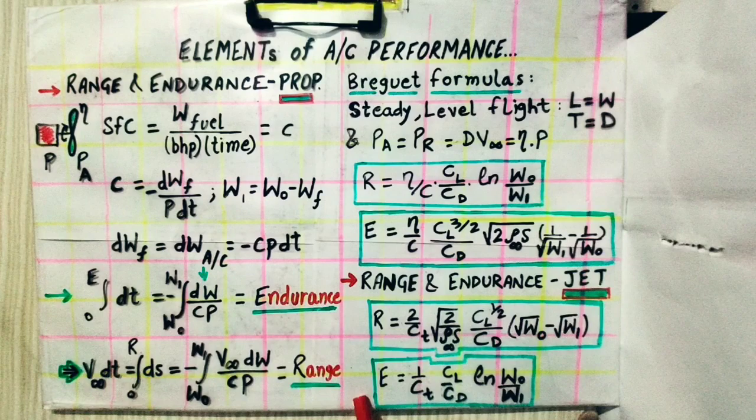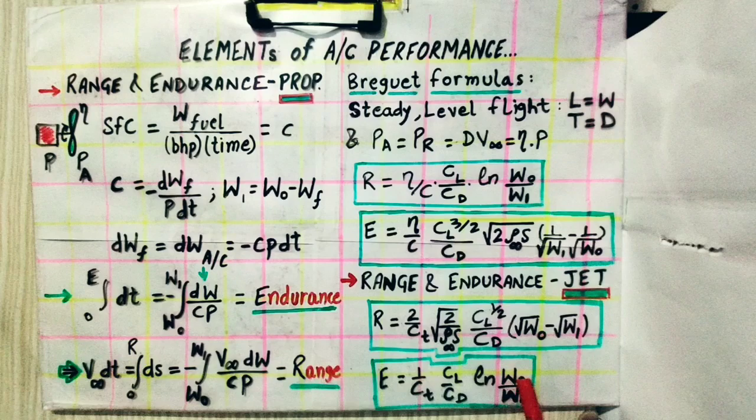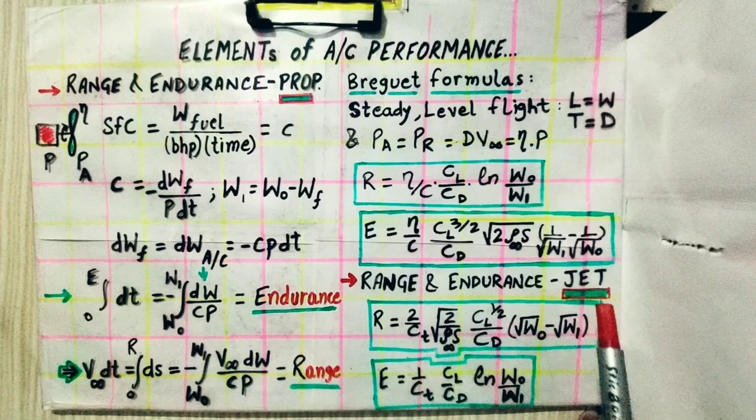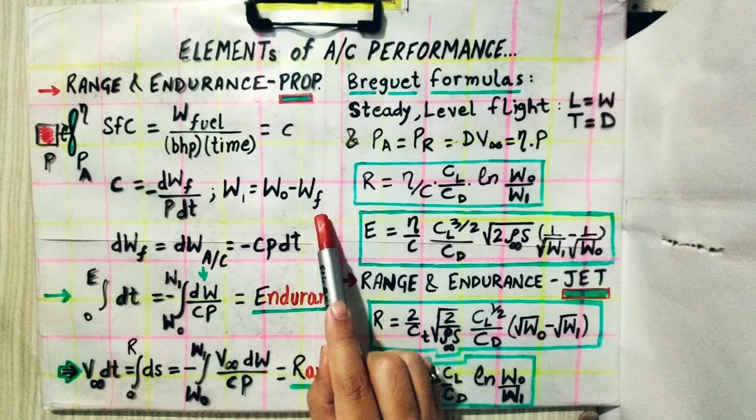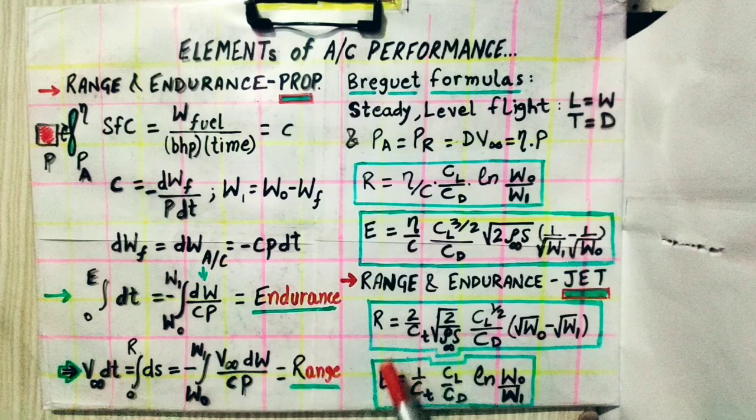For both jet range and endurance, fuel consumption C_T should be minimum and initial weight W₀ should be maximum — meaning the fuel load should be as large as possible — for optimal performance.